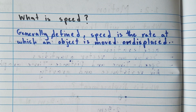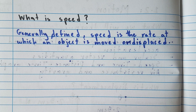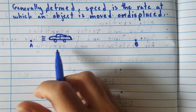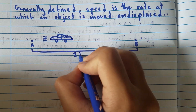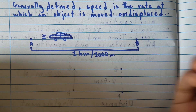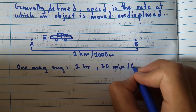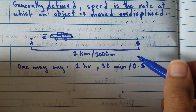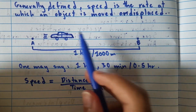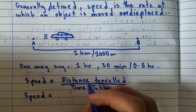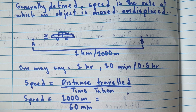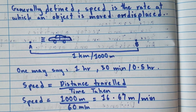Let's talk about speed. Speed is the rate at which an object is moving or is being displaced. Say you have a car traveling from point A to point B, covering a distance of 1 kilometer or 1000 meters. The formula for speed is: speed equals distance traveled over time taken. If the car takes 60 minutes, then speed equals 1000 over 60, which gives us 16.67 meters per minute.